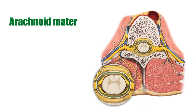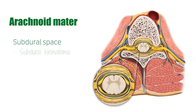A potential space called the subdural space exists between the inner layer of the dura mater and the tightly aligned arachnoid mater. The subdural space can develop when hemorrhage-inducing brain trauma results in the buildup of blood between these two layers. This is called a subdural hematoma.